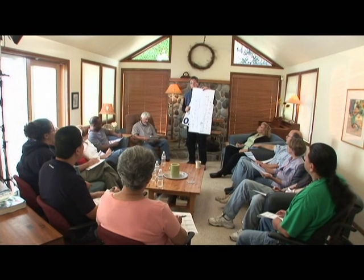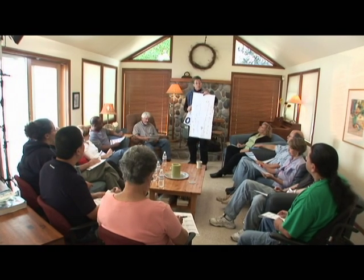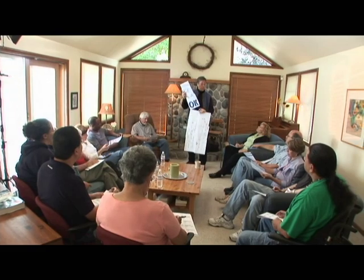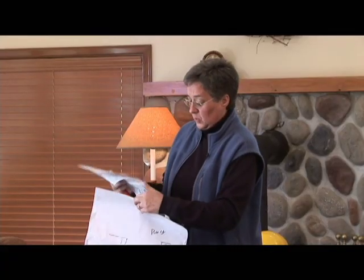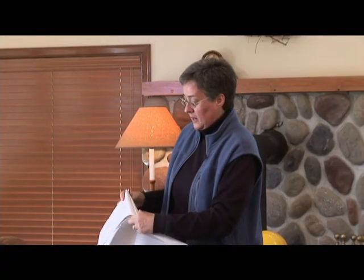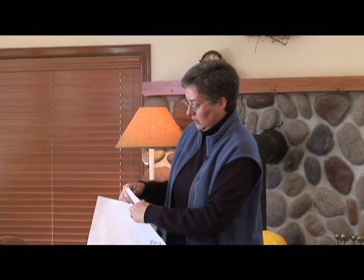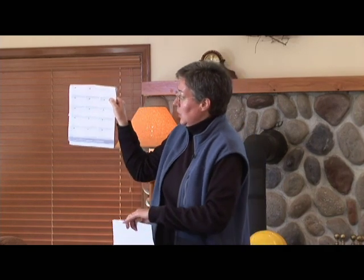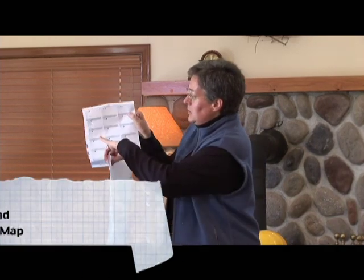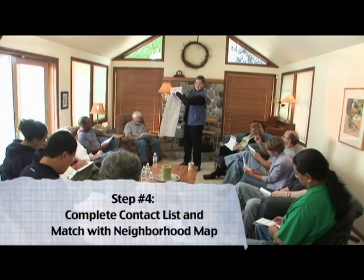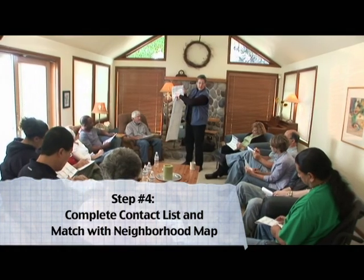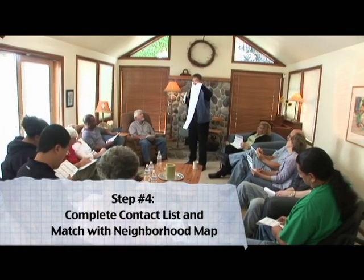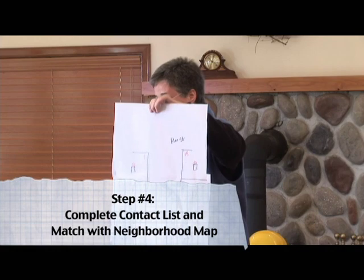Now that we've completed our neighborhood map, step number four says we're going to complete our contact list. So if you turn in your handout to the contact list, what we're going to do now is match the contact information in each of our houses with our contact map.